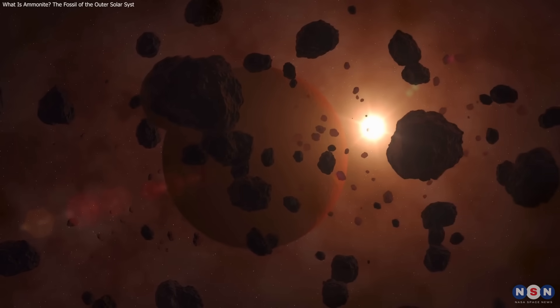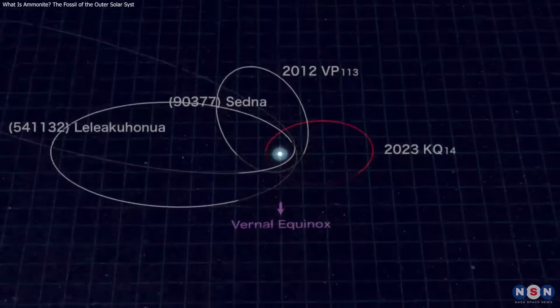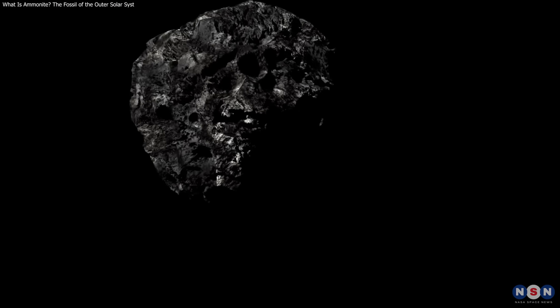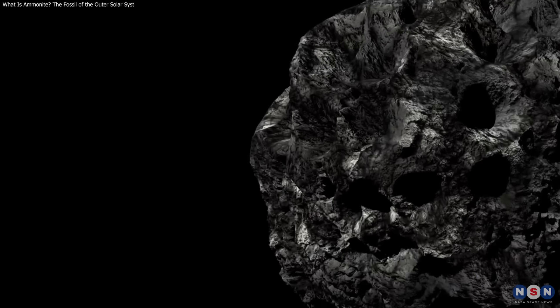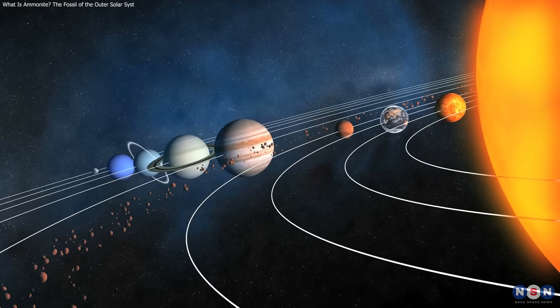Ammonite may not solve the Planet Nine mystery, but it's a game-changer. Its unique orbit challenges existing models, reminding us that science is all about questioning, revising, and exploring new data. As we discover more, it could reveal hidden forces shaping our solar system.